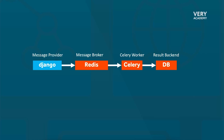The Celery worker picks it up and then processes that task. By using these task producers, the Django application can offload time-consuming or resource-intensive tasks to asynchronous execution, and that's going to potentially improve the responsiveness and scalability of our Django application. Task producers also enable the separation of concerns, allowing Django applications to focus on processing user requests and leaving all background tasks to the Celery workers.